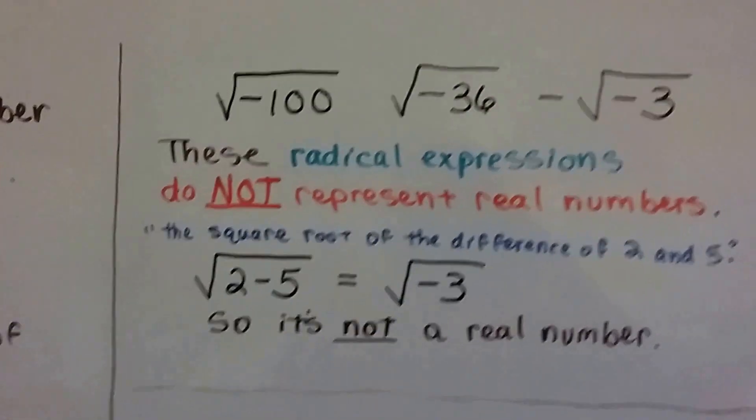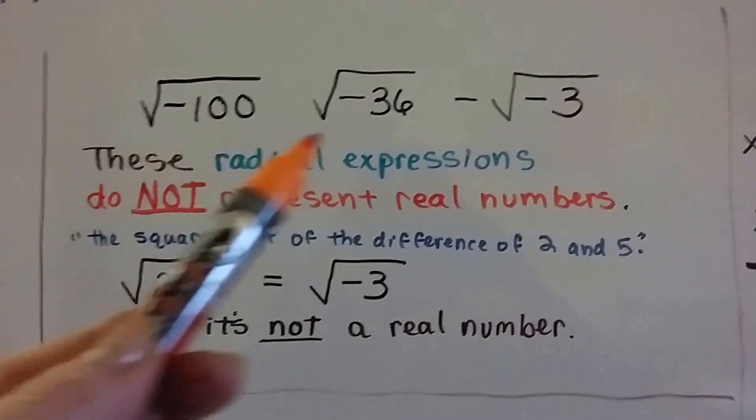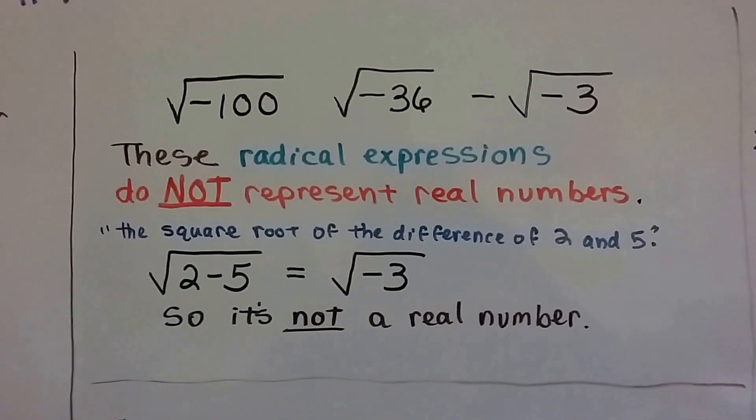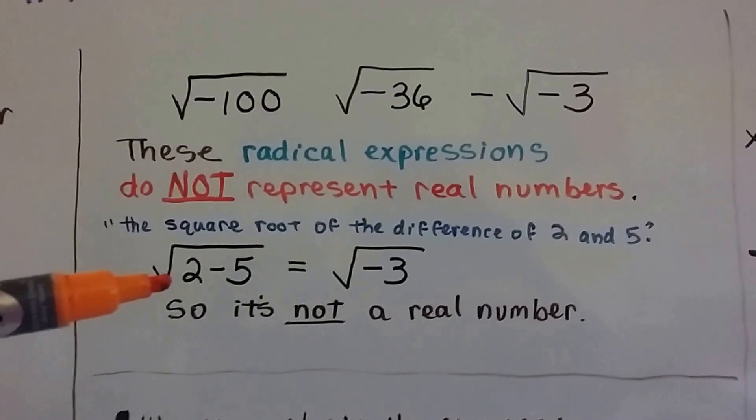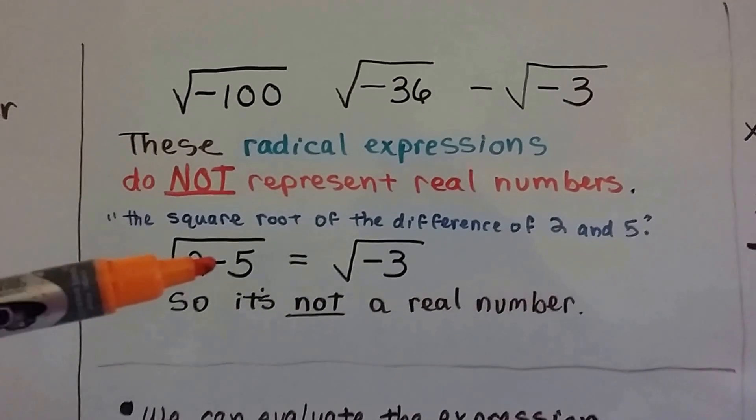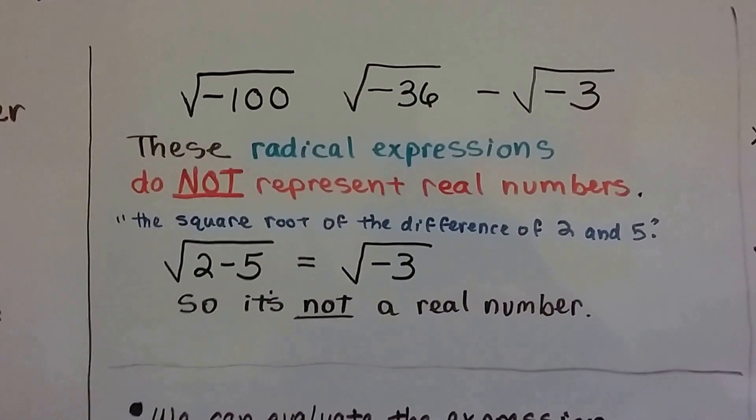So all of these are not real numbers. We can't have a negative for a radicand. And the way we would read this one is the square root of the difference of 2 and 5. If we have 2 take away 5, that's going to give us a negative 3. That puts us back with these. It's not a real number.